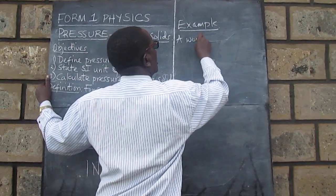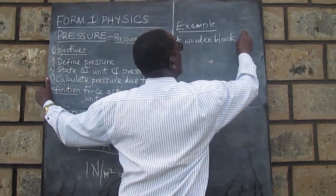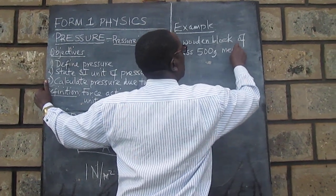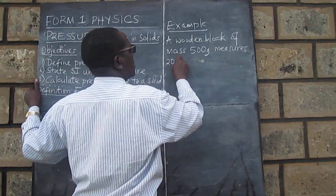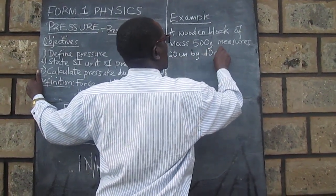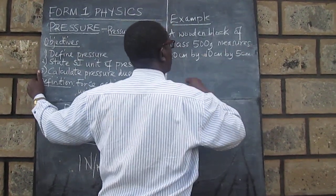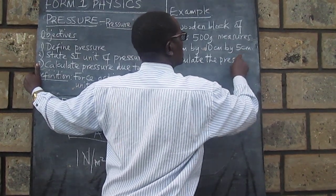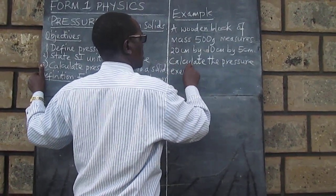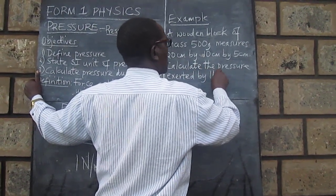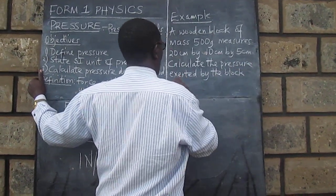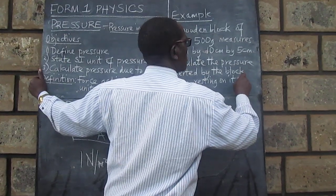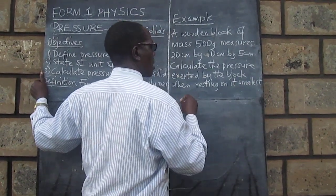A wooden block of mass 500 grams measures 20 centimeters by 10 centimeters by 5 centimeters. Calculate the pressure exerted by the block when resting on its smallest surface.